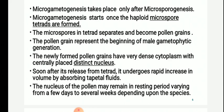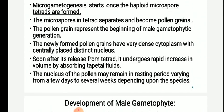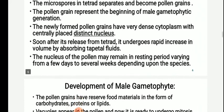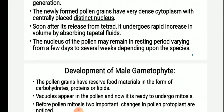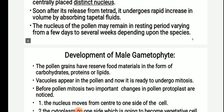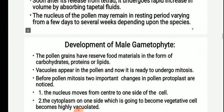The microspores in tetrads separate and become pollen grains. The pollen grain represents the beginning of the male gametophytic generation. The newly formed pollen grains have very dense cytoplasm and a centrally placed distinct nucleus. Soon after its release from the tetrad, it undergoes rapid increase in volume by absorbing the tapetal fluid. The nucleus of the pollen may remain in a resting period for varying number of days — from a few days to several weeks depending upon the species. Once the microspores are released, each pollen grain becomes very big after absorbing the tapetal fluid.